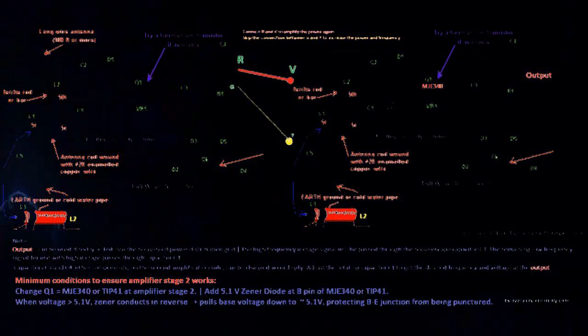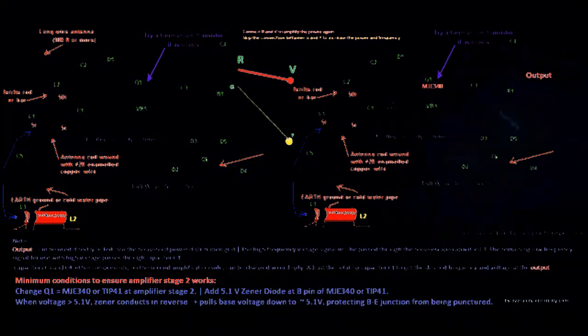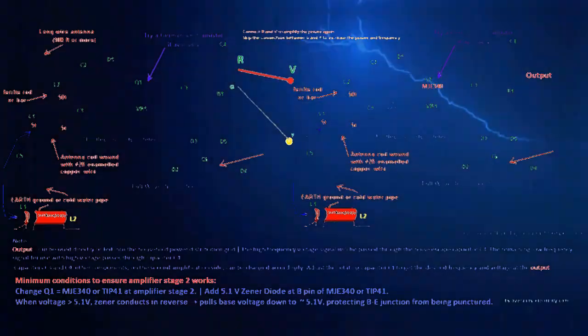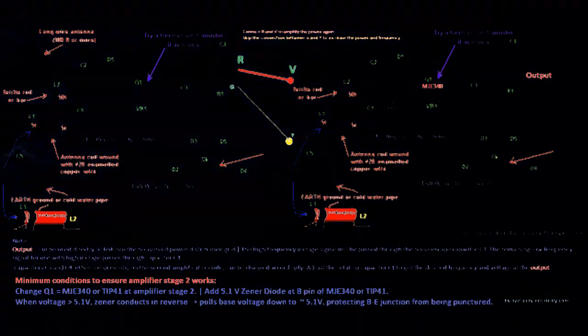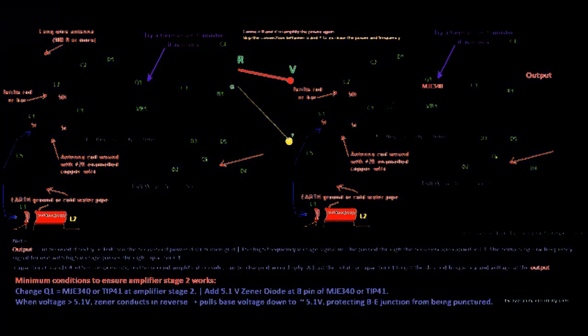That's why the quality of the ferrite material is crucial. You want high permeability, minimal eddy current losses, and a geometry that supports radial, not toroidal, field flow.